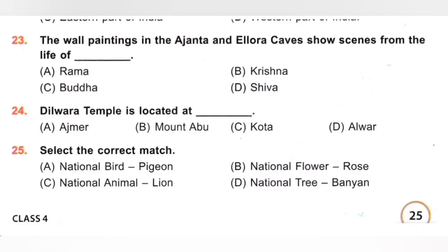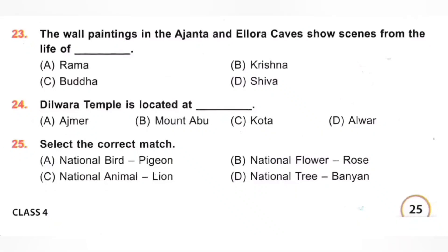24th. Dilwara Temple is located at: A. Ajmer, B. Mount Abu, C. Kota, D. Alwar. Dilwara Temple is located at Mount Abu. Option B is the correct answer.